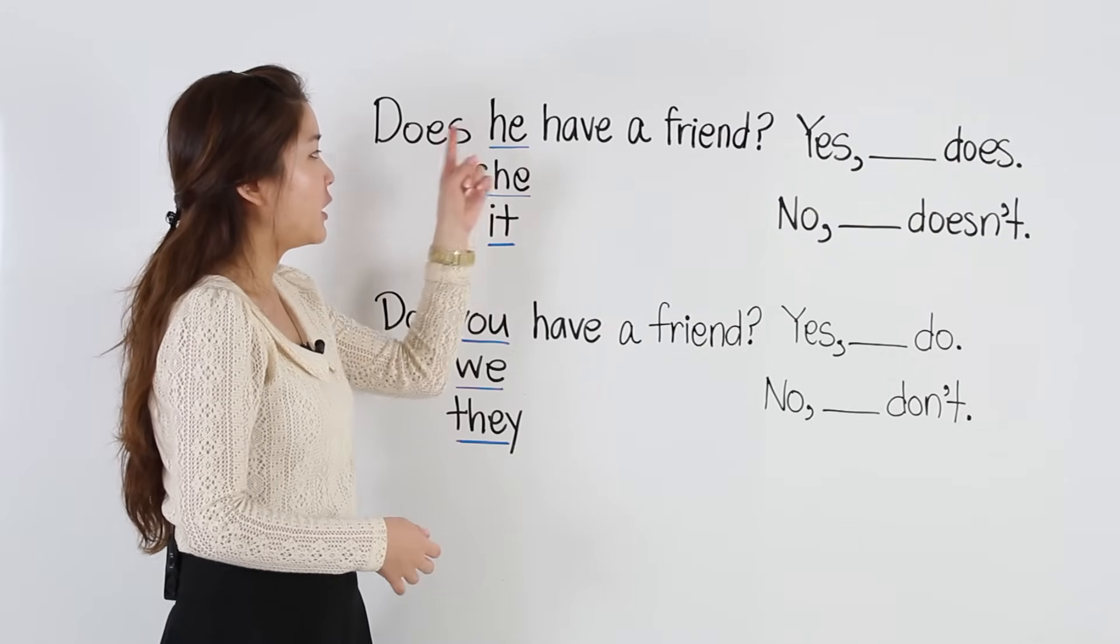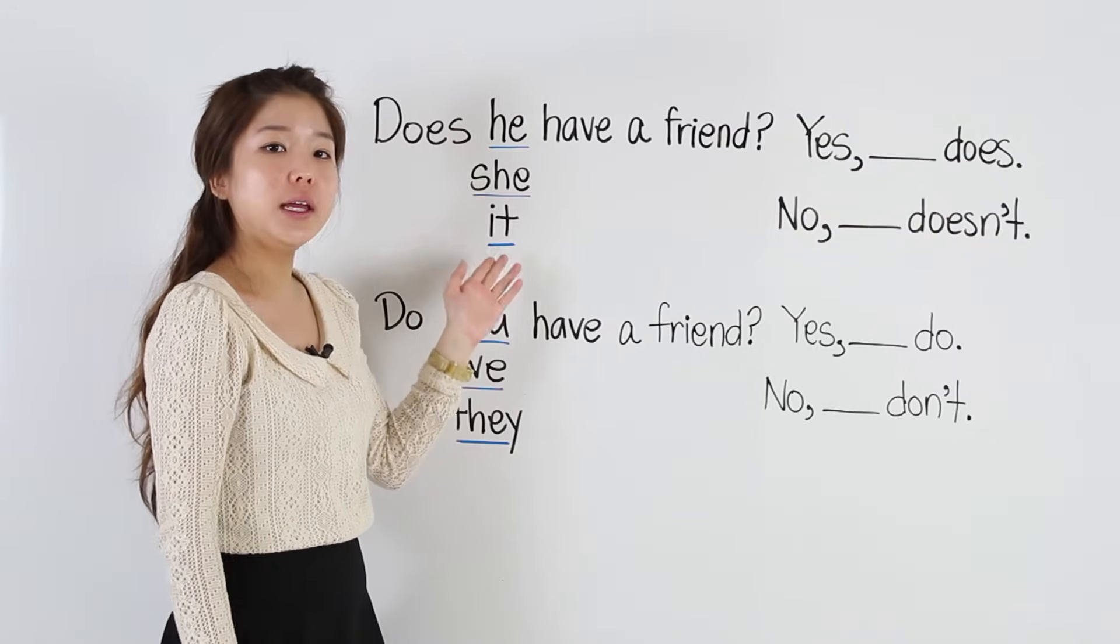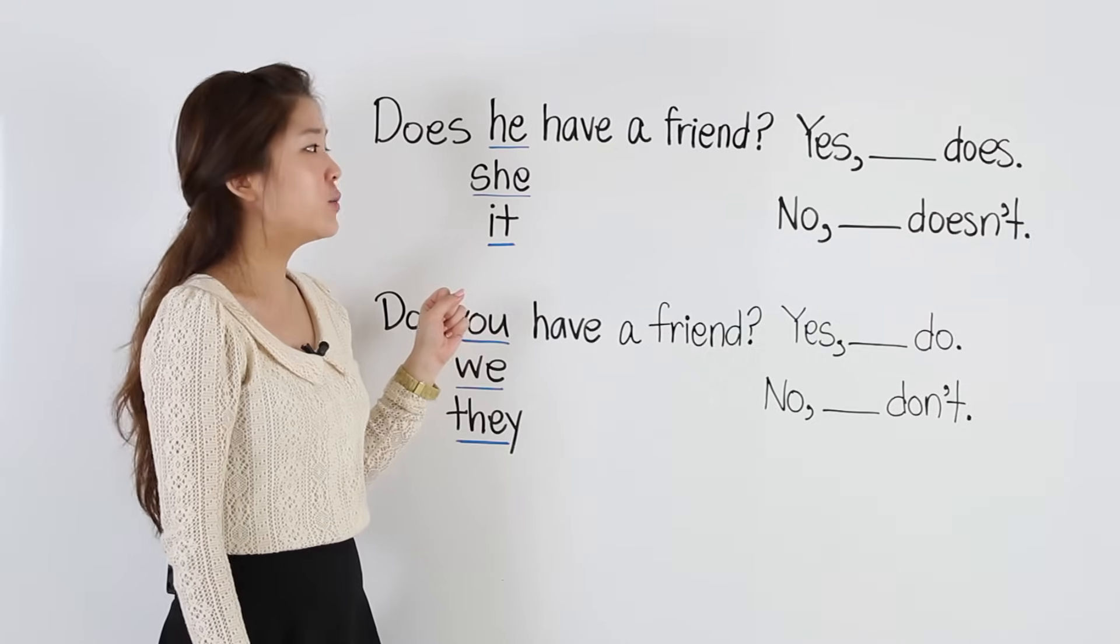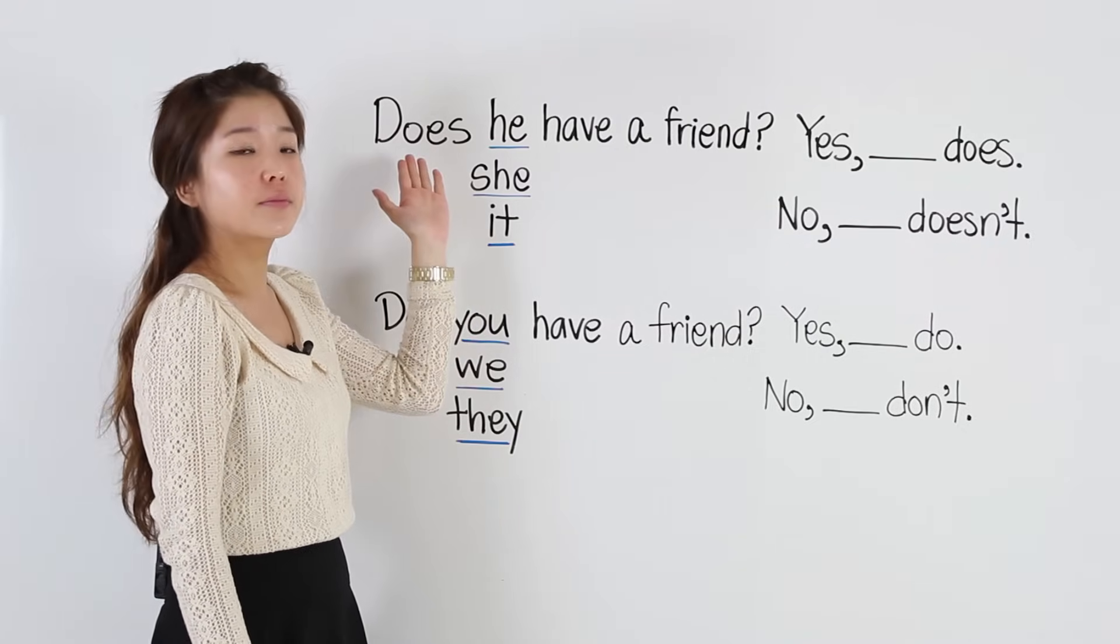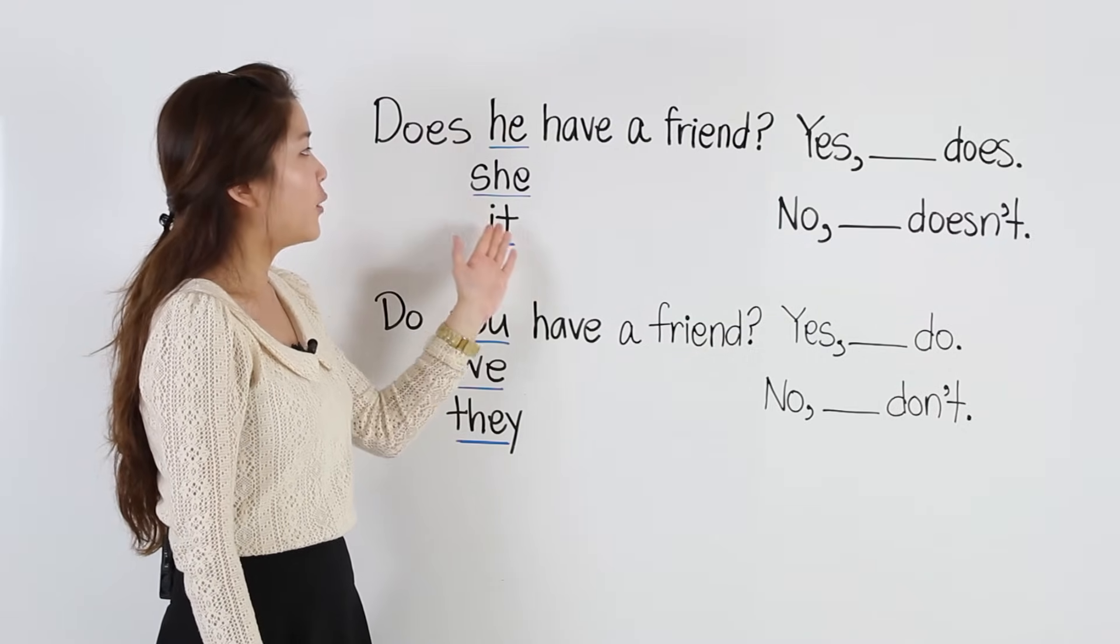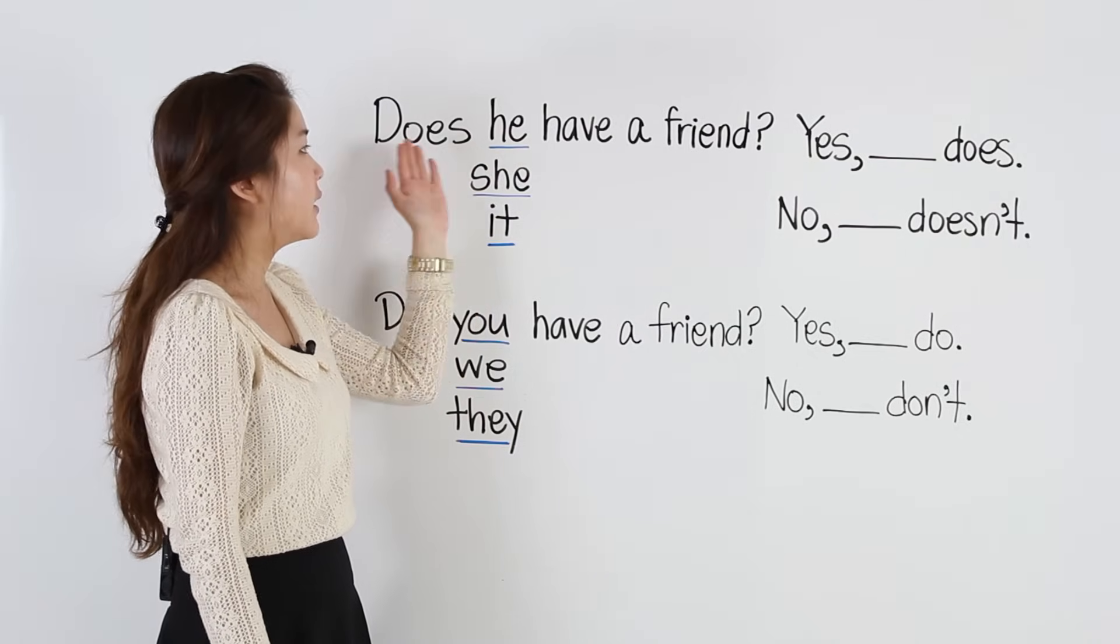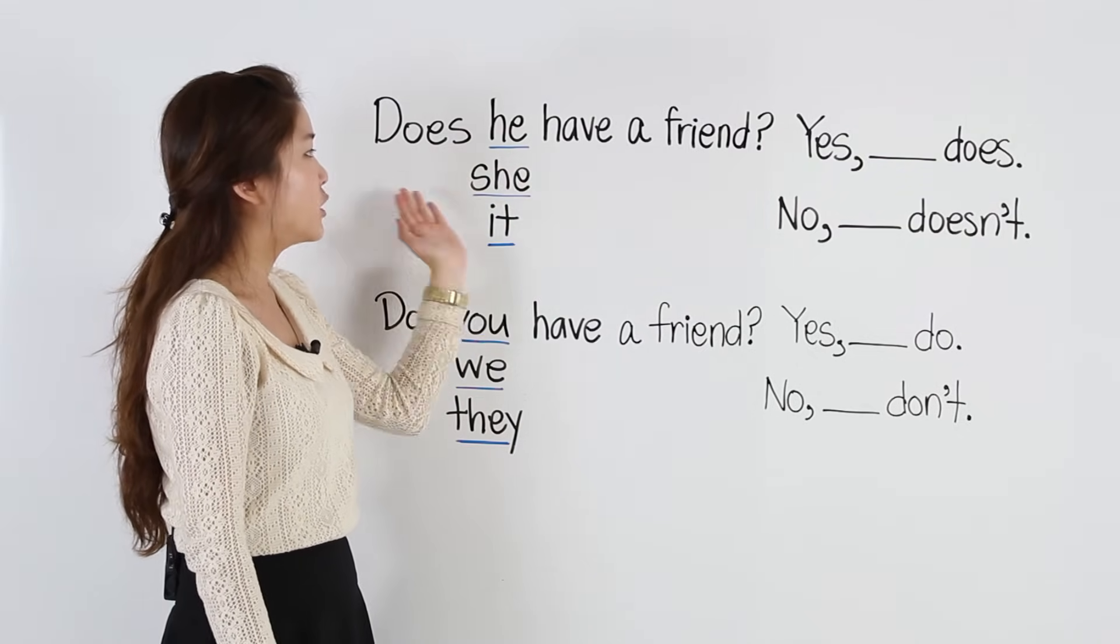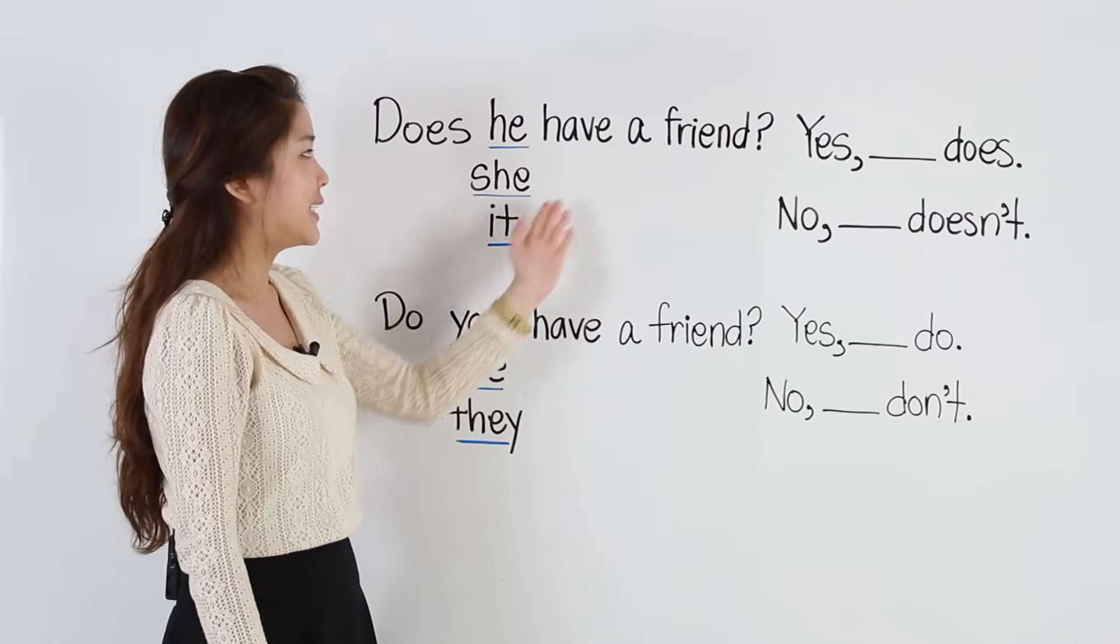When we are talking about he, she, or it, the question always begins with does. After the pronoun, we have have. So we say, does he have? Does she have? Does it have?